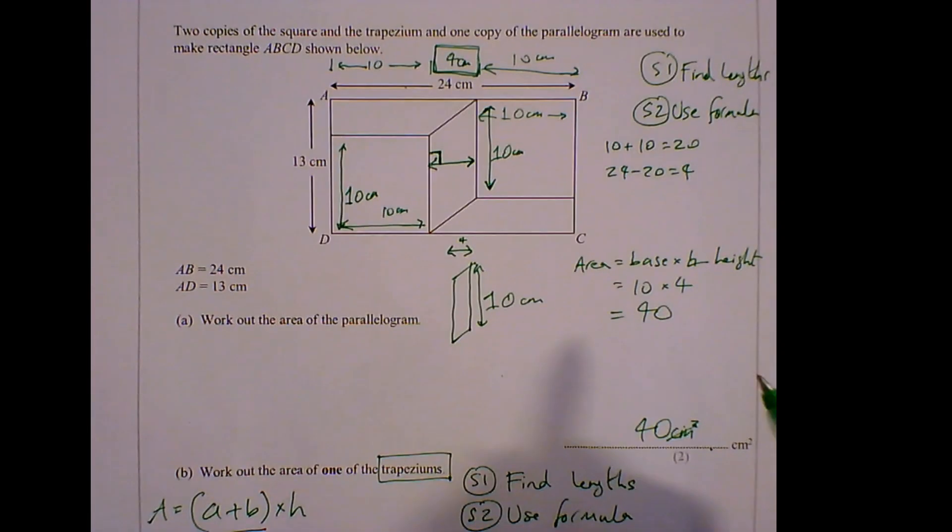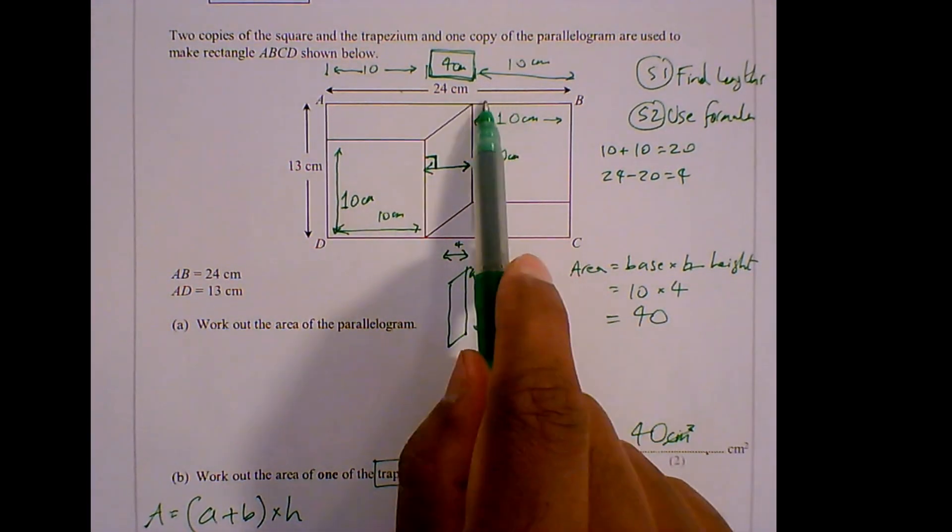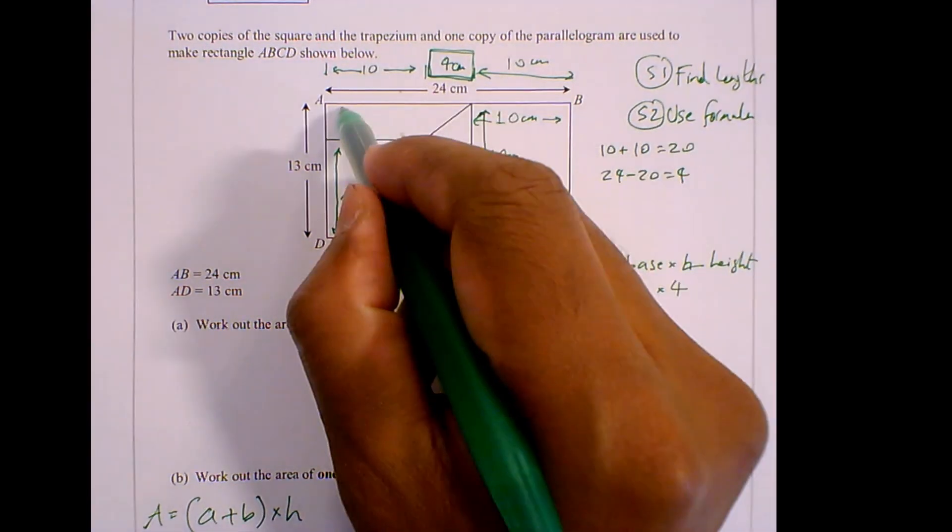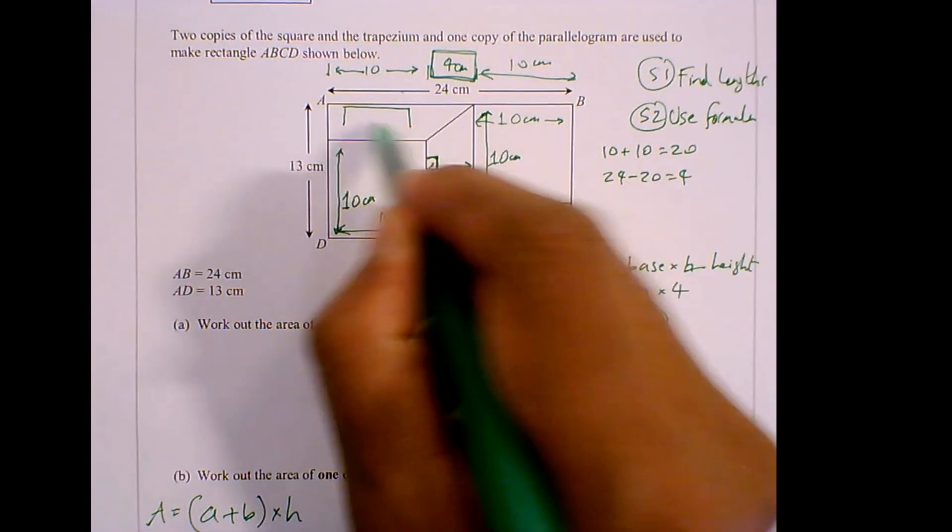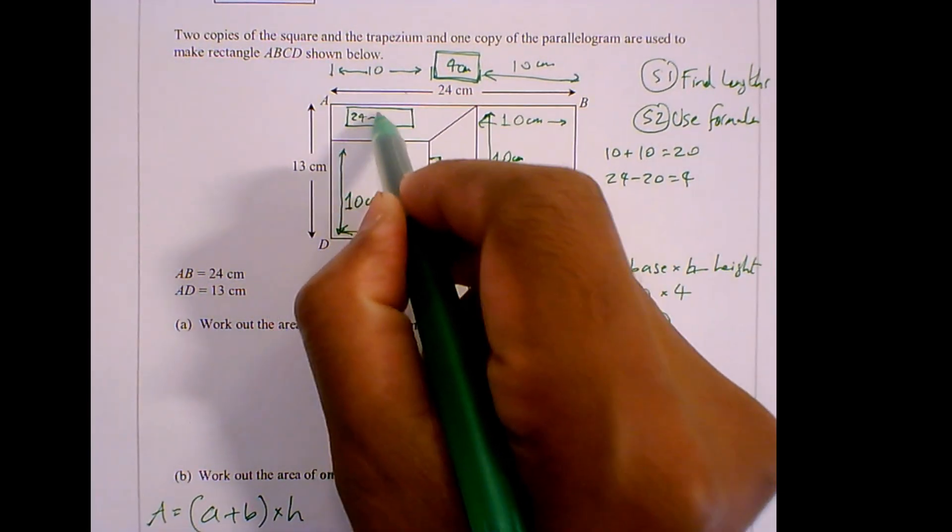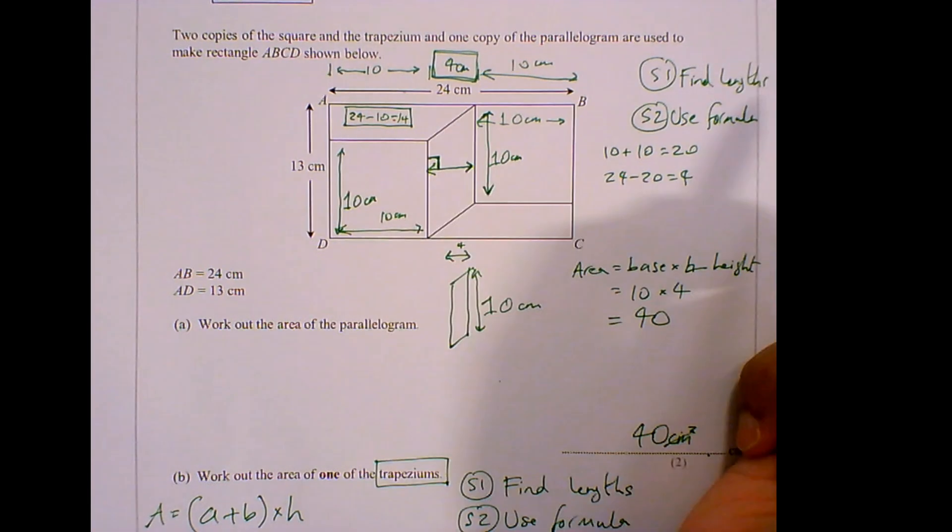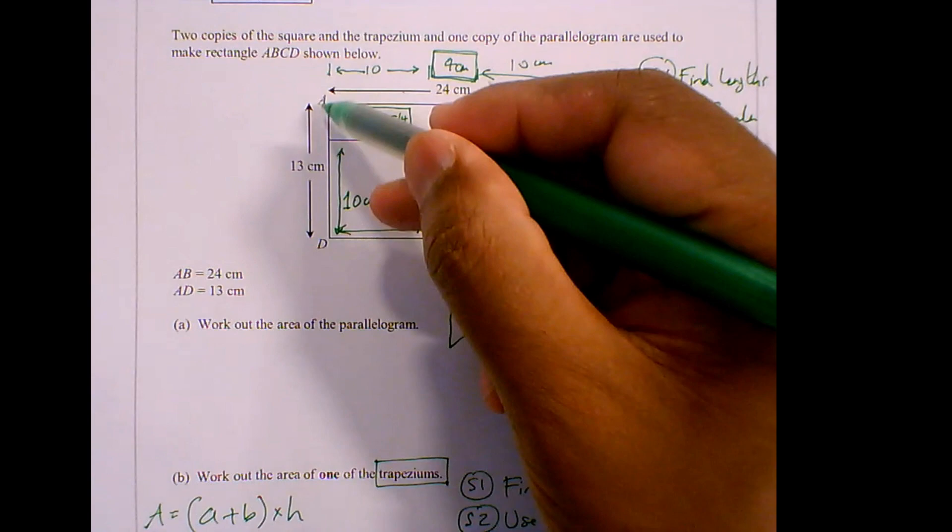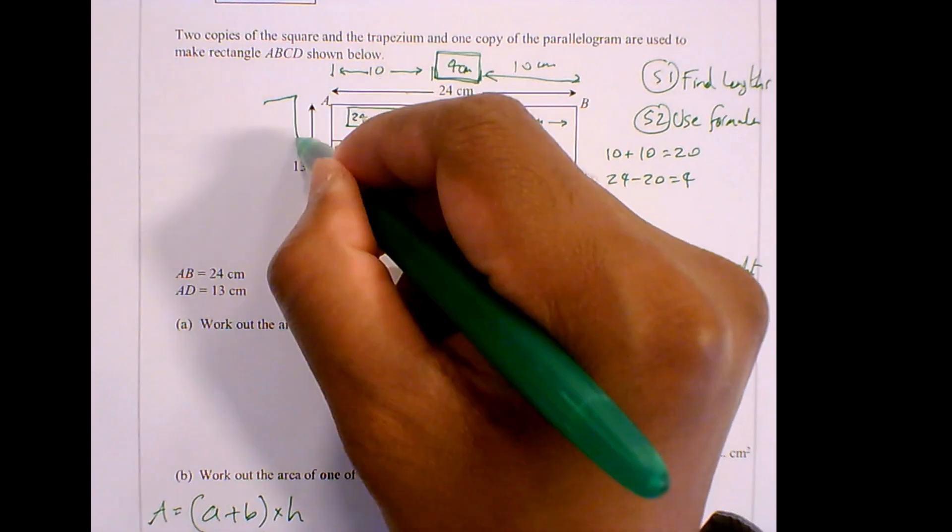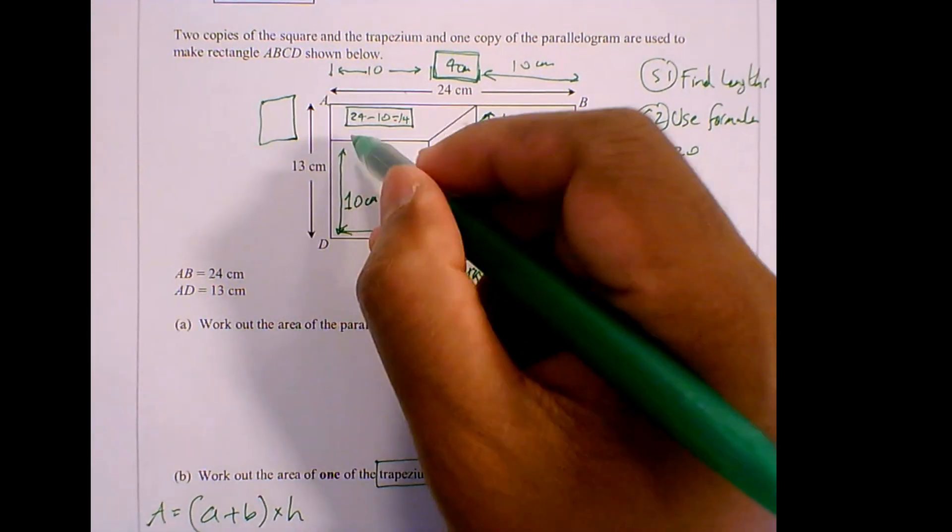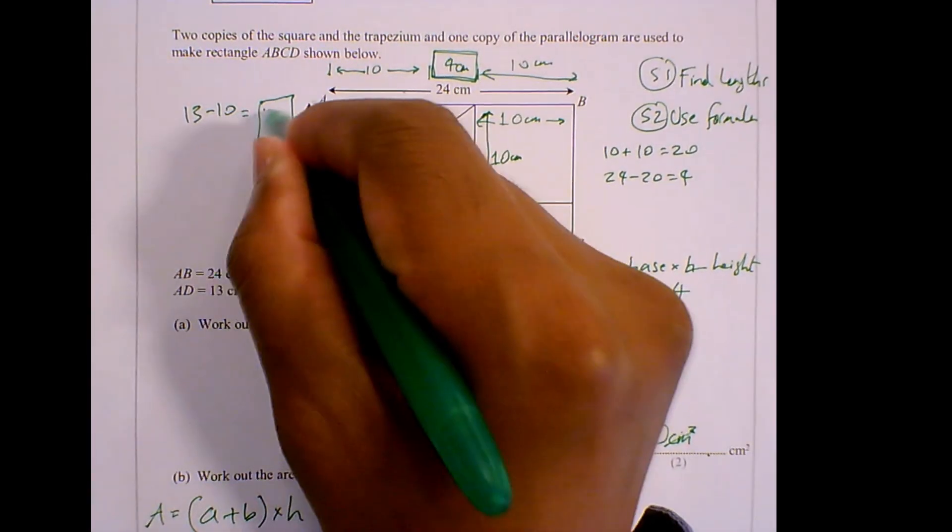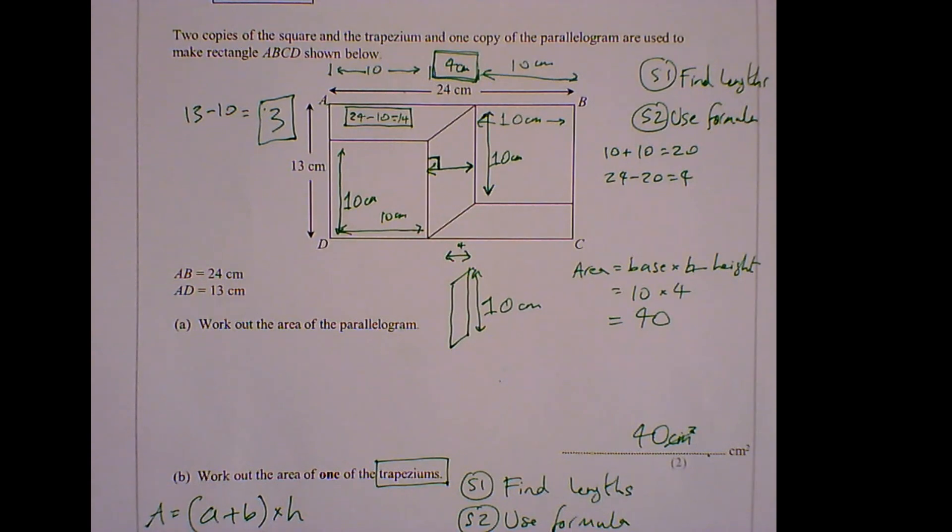So now if I look at my diagram, I've got 10 here and all of this makes 24. So this bit here must be 24 take away 10, which gives me 14. So I've got 14 there. All of this is 13 and this little bit is 10. So this part here must be 13 take away 10, that gives me 3.